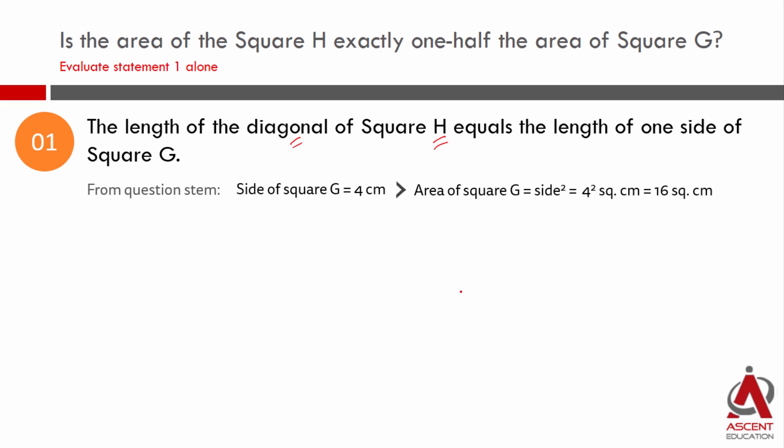Square area is side squared. Square G's side is 4 cm, so its area will be 4 into 4, which is 16 square cm. From the question stem, we have square G's area. If in the statement we get square H's area, then we probably have an answer to this question. In the statement, diagonal of square H is the same as side of square G. Diagonal of square H is going to be equal to 4 cm.